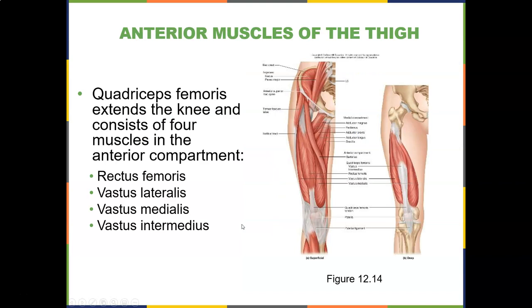The quadriceps femoris extend the knee and consist of four muscles in the anterior compartment: rectus femoris, vastus lateralis, vastus medialis, and vastus intermedius.